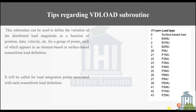Before explaining the model, let us talk about JL type first, as many students might not be familiar with it. JL type is a parameter defined inside the subroutine that determines the type of distributed load. This parameter can be viewed and changed in keywords.